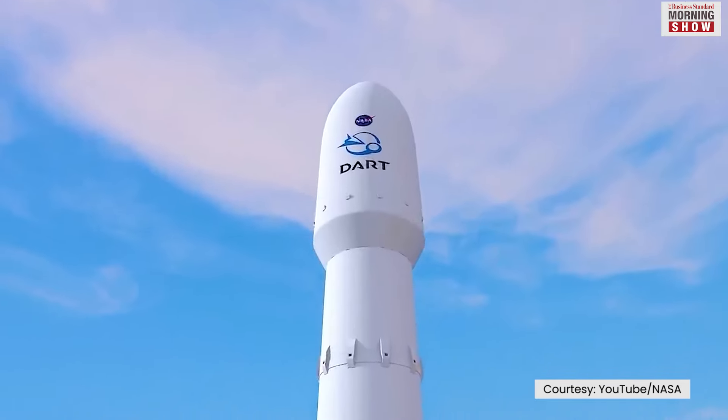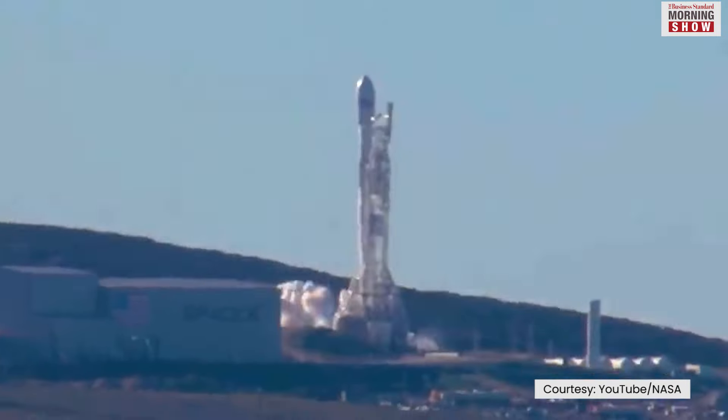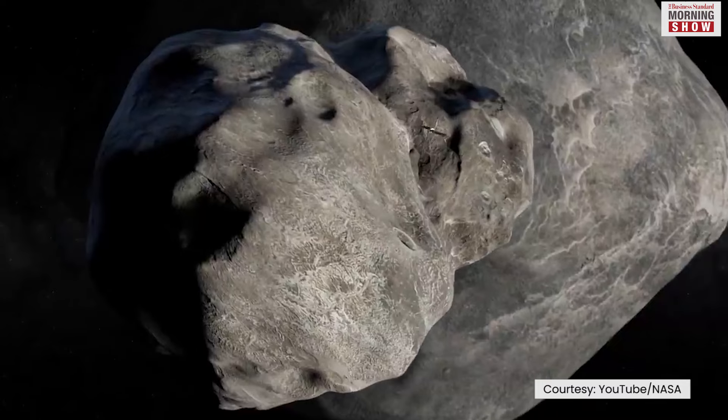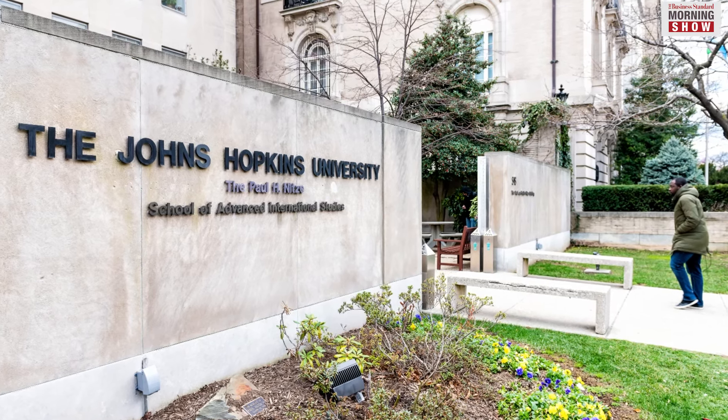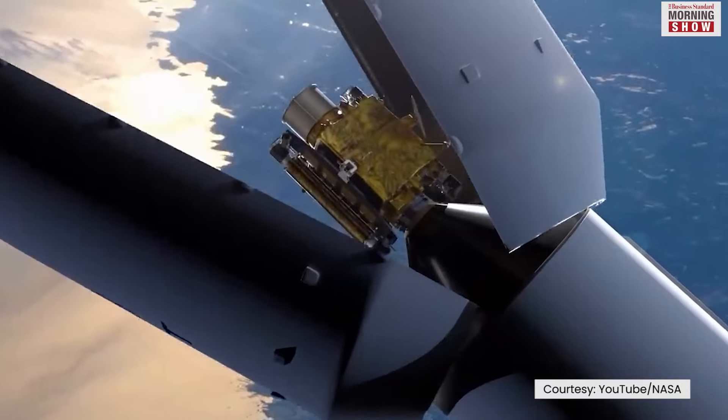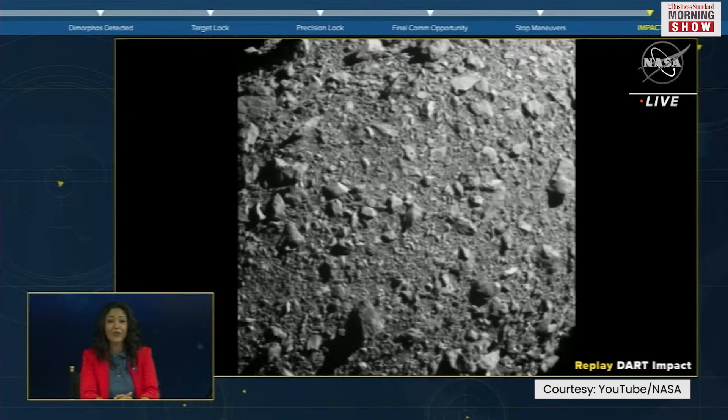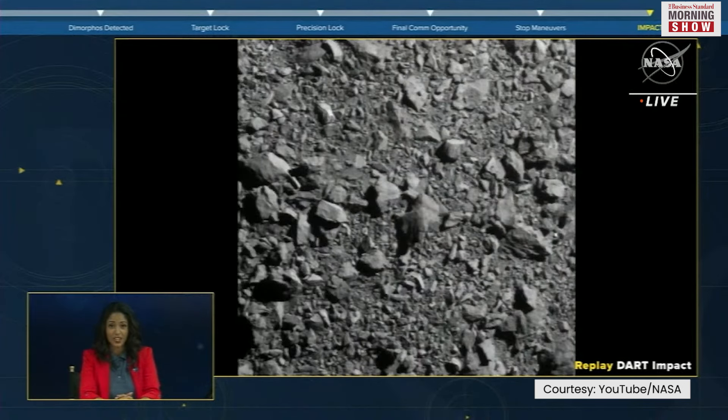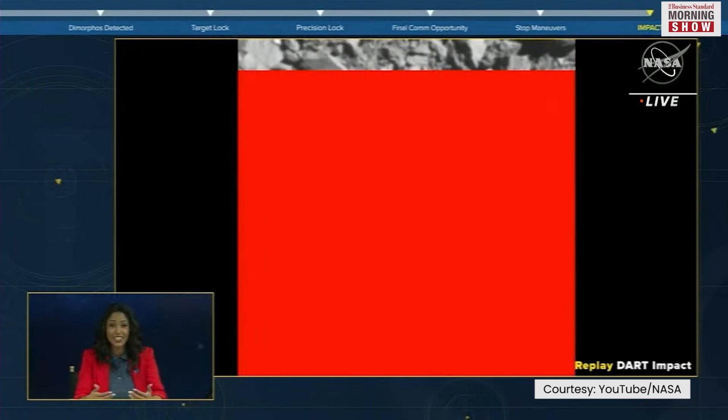The NASA vehicle crashed into Dimorphos at a blistering speed of around four miles per second. Mission control at the Johns Hopkins Applied Physics Laboratory in Maryland announced the successful impact. DART's onboard camera live-streamed second-by-second images to Earth till it went blank due to the collision with the asteroid.